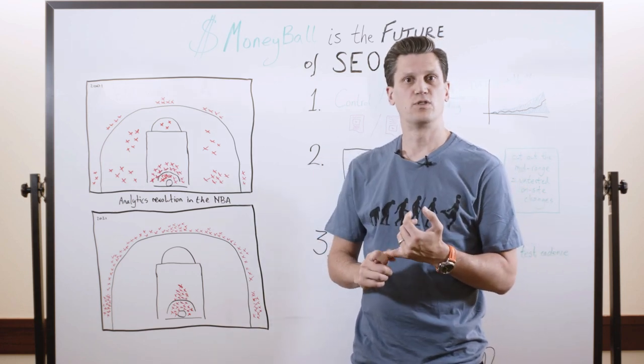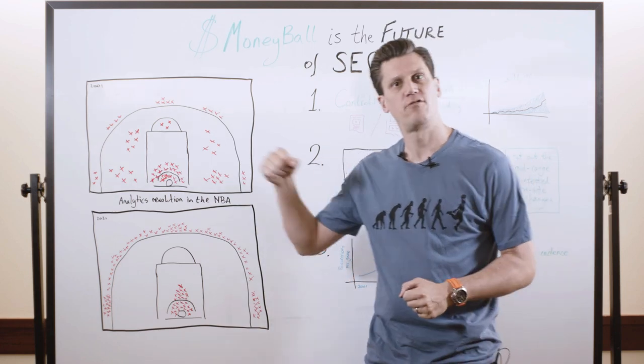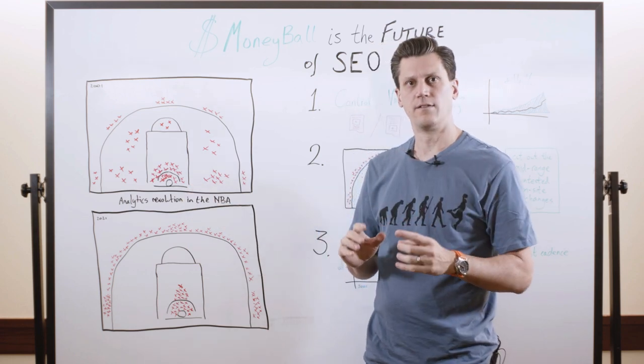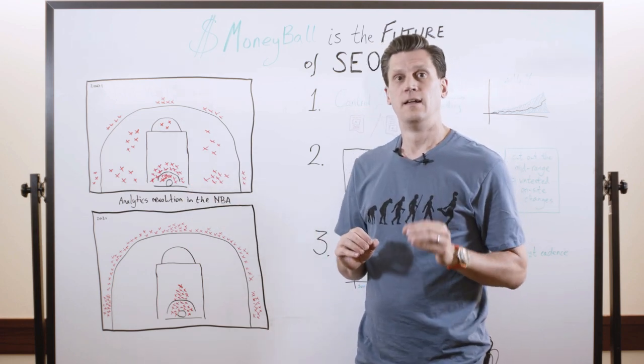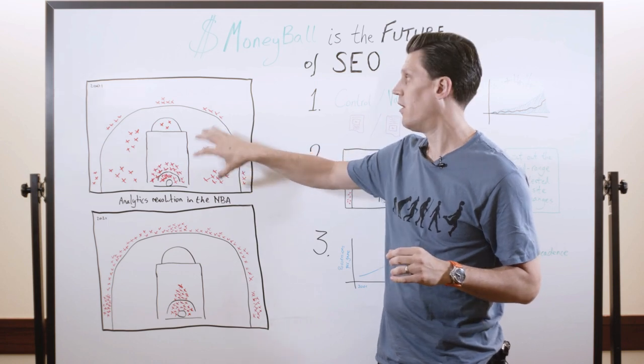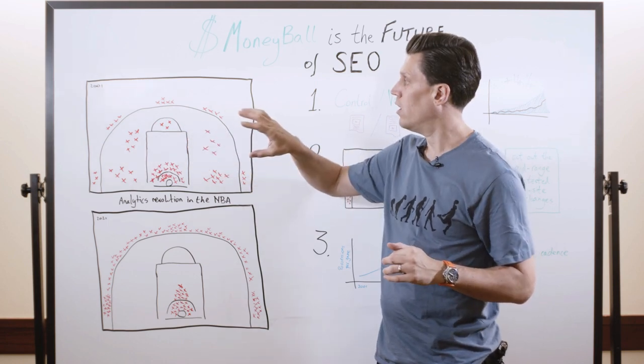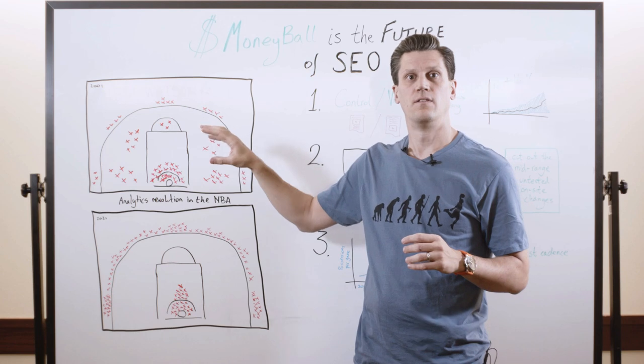Like how closely guarded the player was when they were shooting, whether they dribbled left, whether they dribbled right, all those kind of little details. And out of that data, they discovered that these mid-range shots that had been part of the game forever were less effective than everyone had assumed.